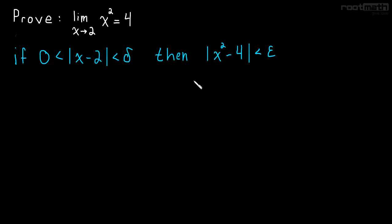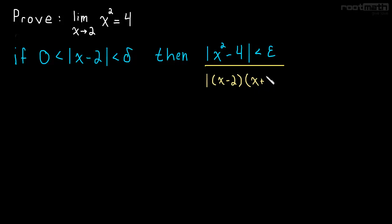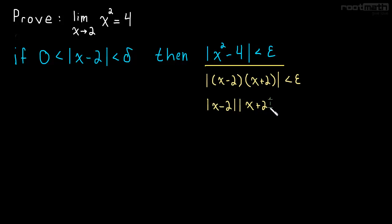To do this, we look over here, we do some scratch work and some simplifying, and we try to find our delta that way. To begin with, let's factor the inside of the absolute value using the difference of squares, so that's x minus two times x plus two. The absolute value of a product is the product of the absolute values, so this is the absolute value of x minus two times the absolute value of x plus two, and that is less than epsilon.